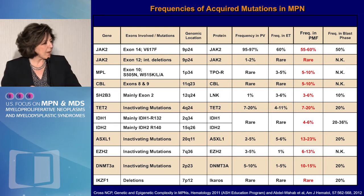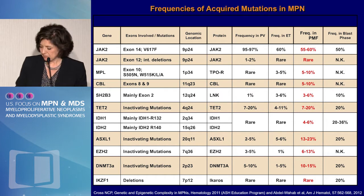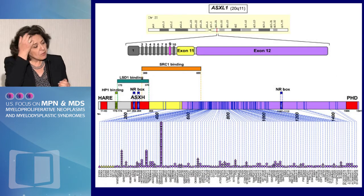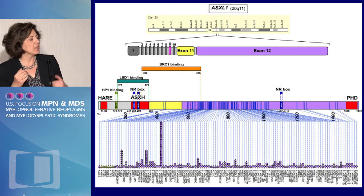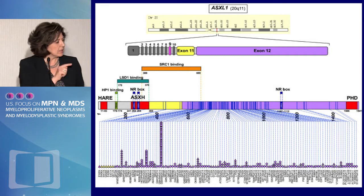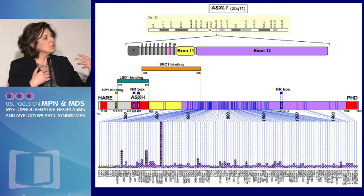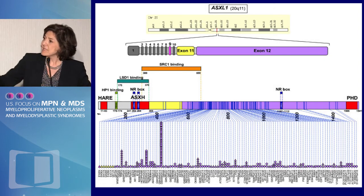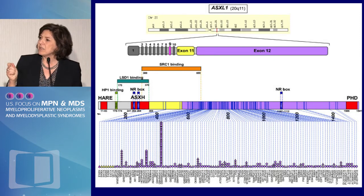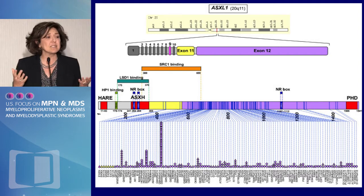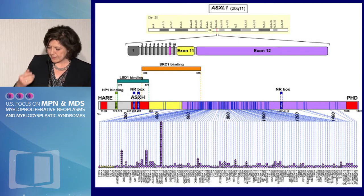Some of the most common mutations are ASXL1, TET2, and DNA methyltransferase 3A, among others. ASXL1 is a gene on chromosome 20, and as you know, deletion 20 is one of the most common genetic events in myelofibrosis. What happens with these mutations is either deletion related to del(20), or a nonsense or frameshift mutation resulting in a stop codon, stopping the transcription of the specific protein and loss of the PHD domain — presumably important for protein-protein interaction. This truncation of transcription has also been described with TET2 and others, and these are really complicated genetic events that need to be studied extensively.